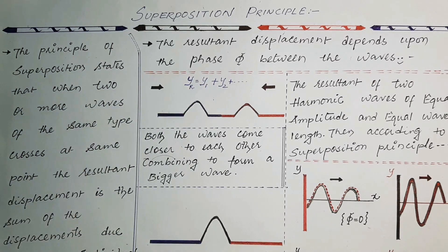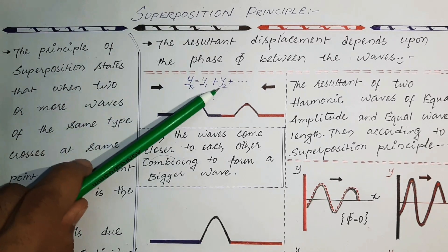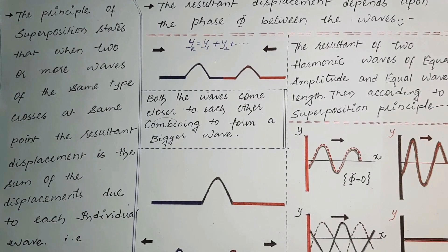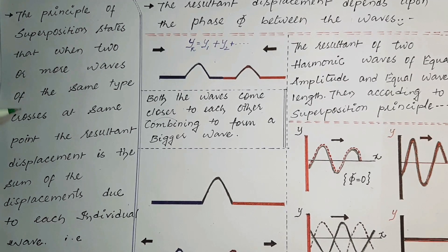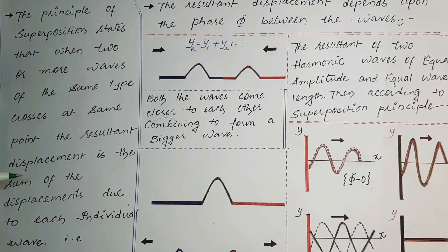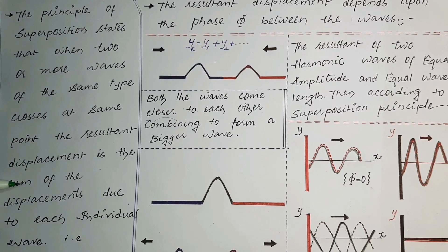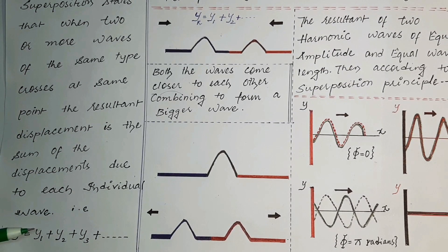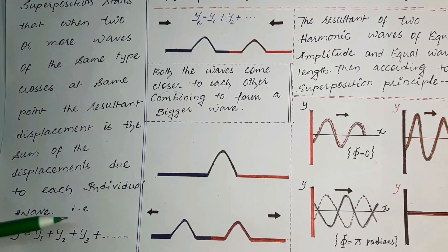Let y1 be the displacement due to the first wave and y2 be the displacement due to the second wave. To find the resultant displacement we can simply add them. The superposition principle states that when two or more waves of the same type cross at the same point, the resultant displacement is simply the sum of the displacements due to each individual wave: y = y1 + y2 + y3, where y1, y2, and y3 are displacements due to the first, second, and third waves respectively.